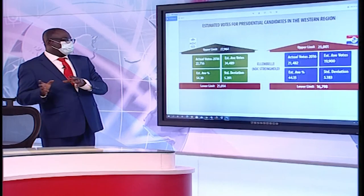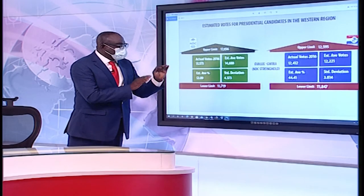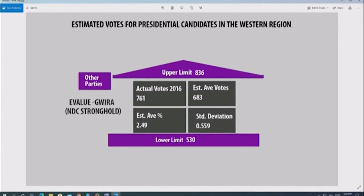Ellembelle, predicted as an NDC stronghold, had estimated votes of 24,000 plus for NDC, but they actually had 22,000 — dropping 2,000 votes. NPP had an estimated nearly 20,000 and gained 21,000 plus — about 1,500 votes gained. In Efutu Jura, also an NDC stronghold, NDC dropped marginally from their estimate of 14,688 to an actual of 13,173. NPP gained marginally — the same pattern across the board.